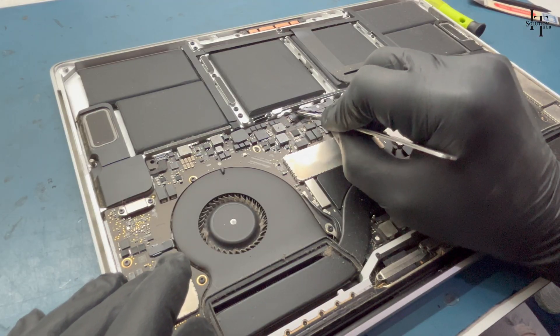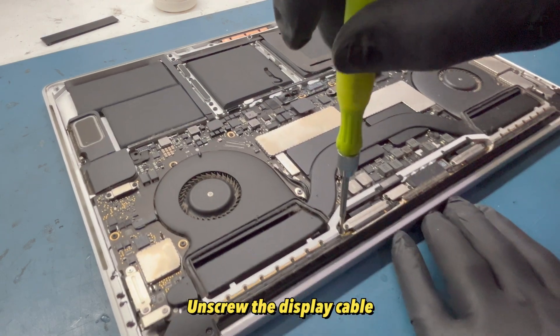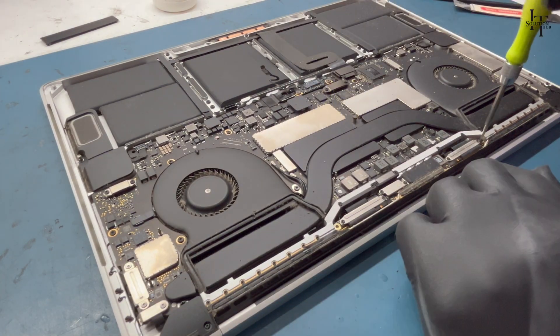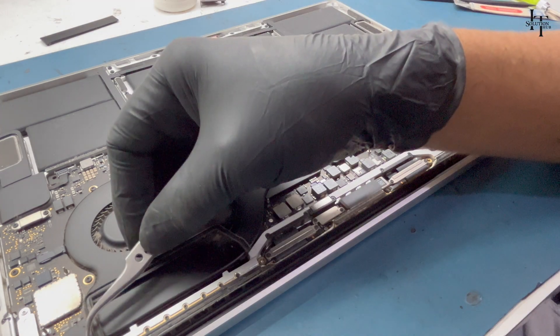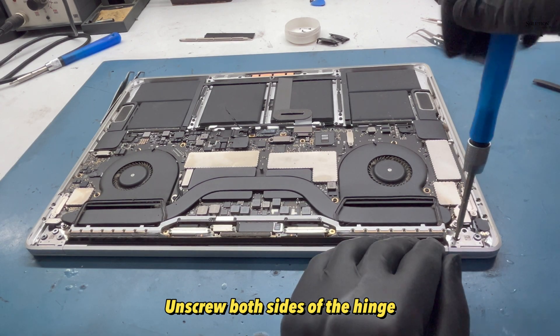Disconnect the battery. Unscrew the display cable. Unscrew the screws on both sides of the hinge cover. Unscrew both sides of the hinge.